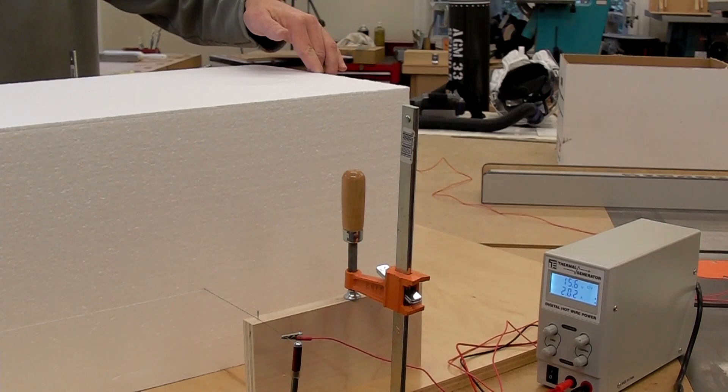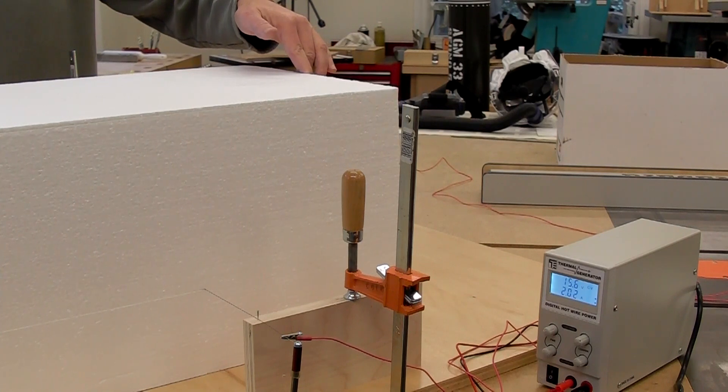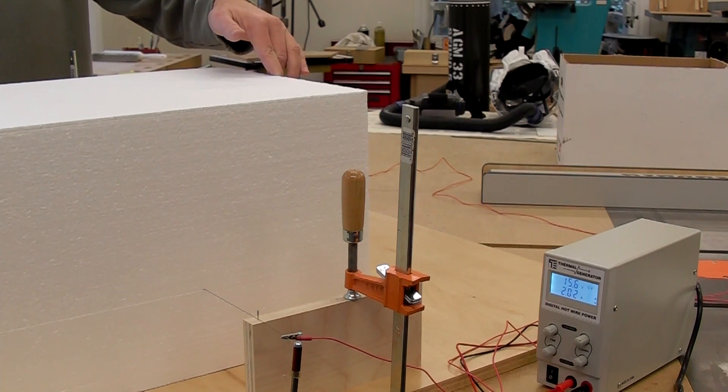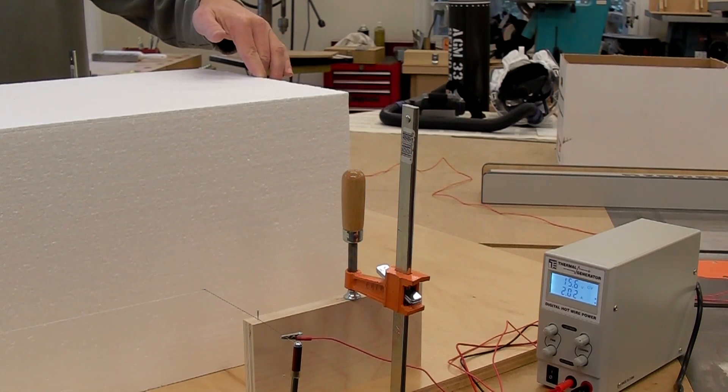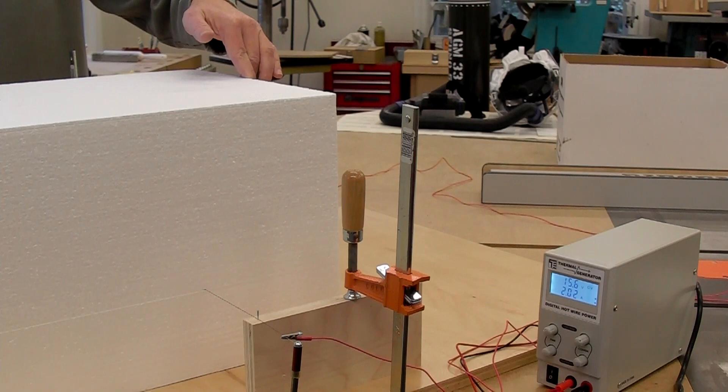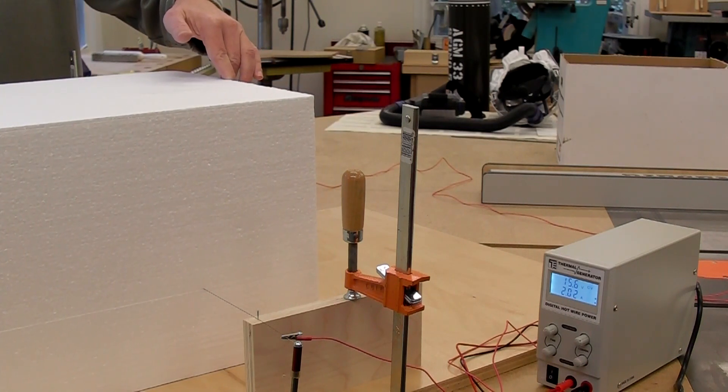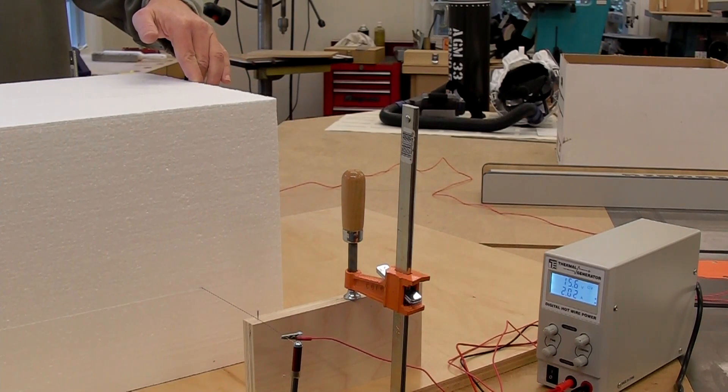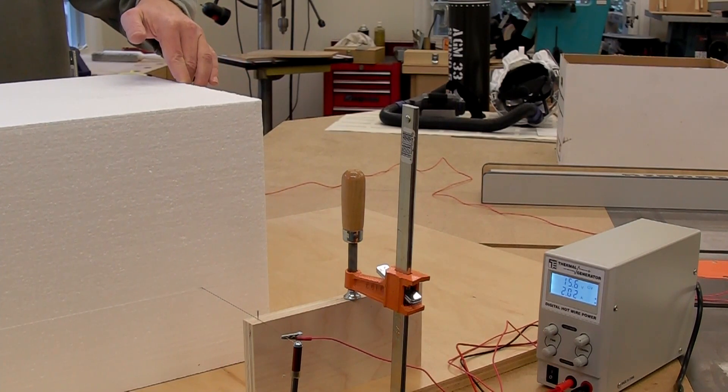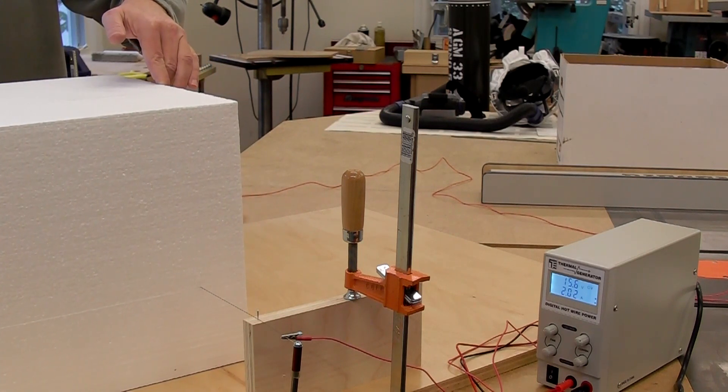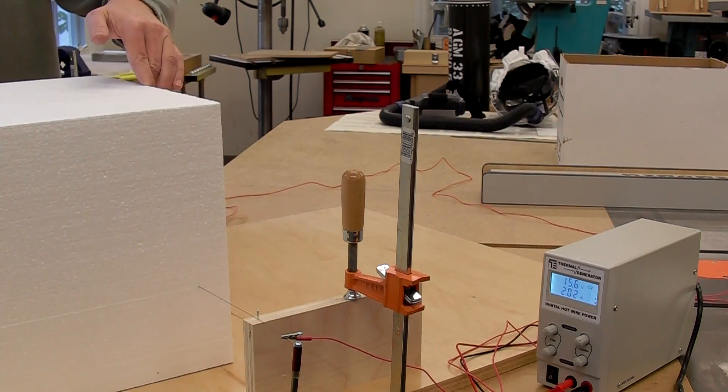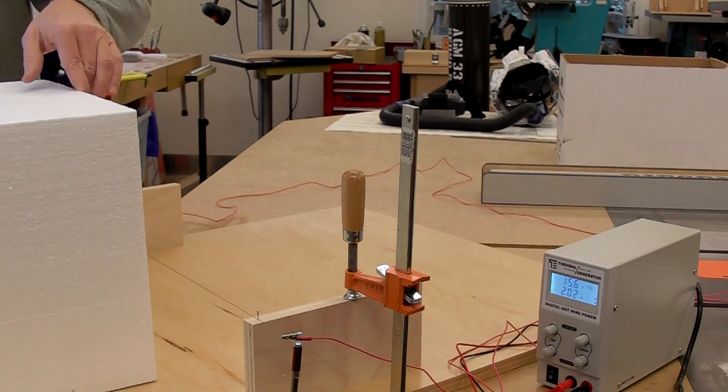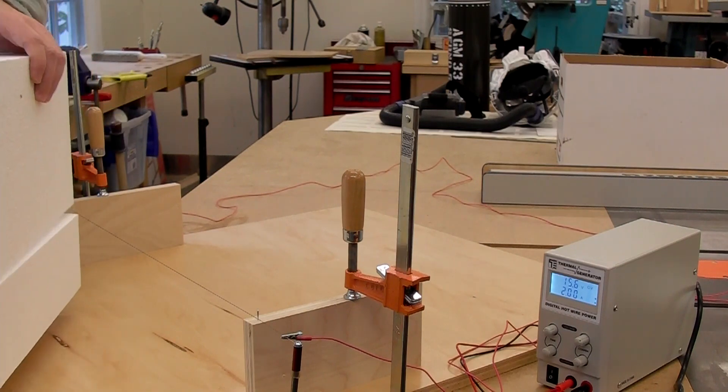Continue the cut all the way through the block. Keep going smoothly and slowly and feeling the resistance. If you feel resistance or you can see the wire bending, slow down. And there you go. A perfect cut.